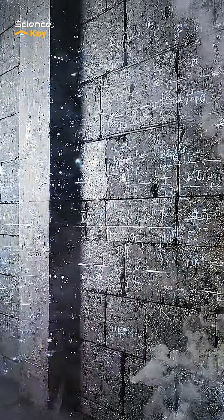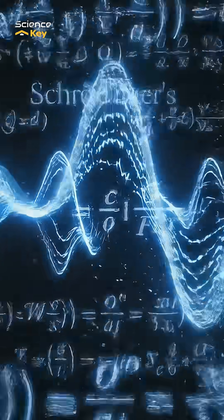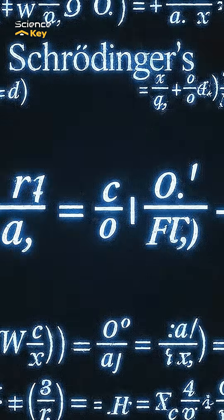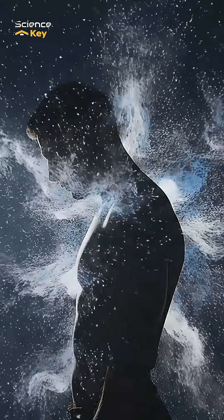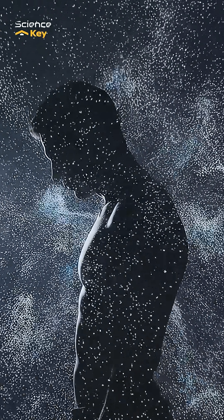You were taught that reality is solid. It isn't. At the deepest level, walls are suggestions. Certainty is optional and impossibility is statistical. Quantum tunneling isn't a glitch. It's proof that reality is stranger and more flexible than we were ever told.